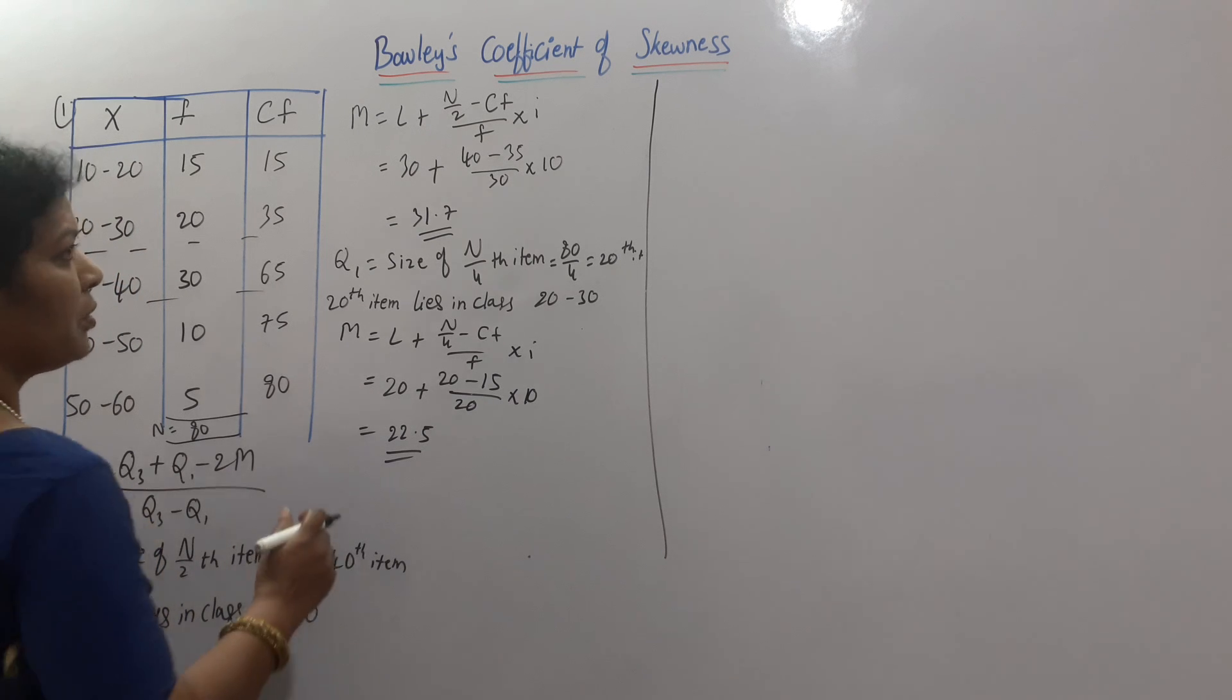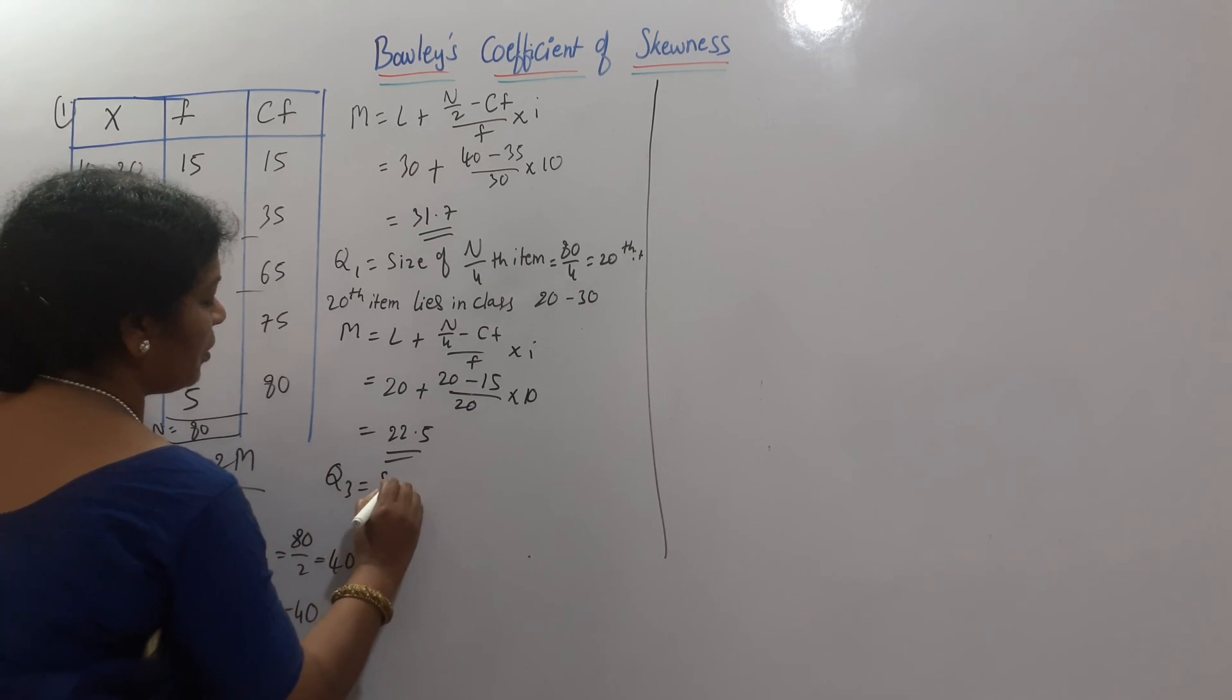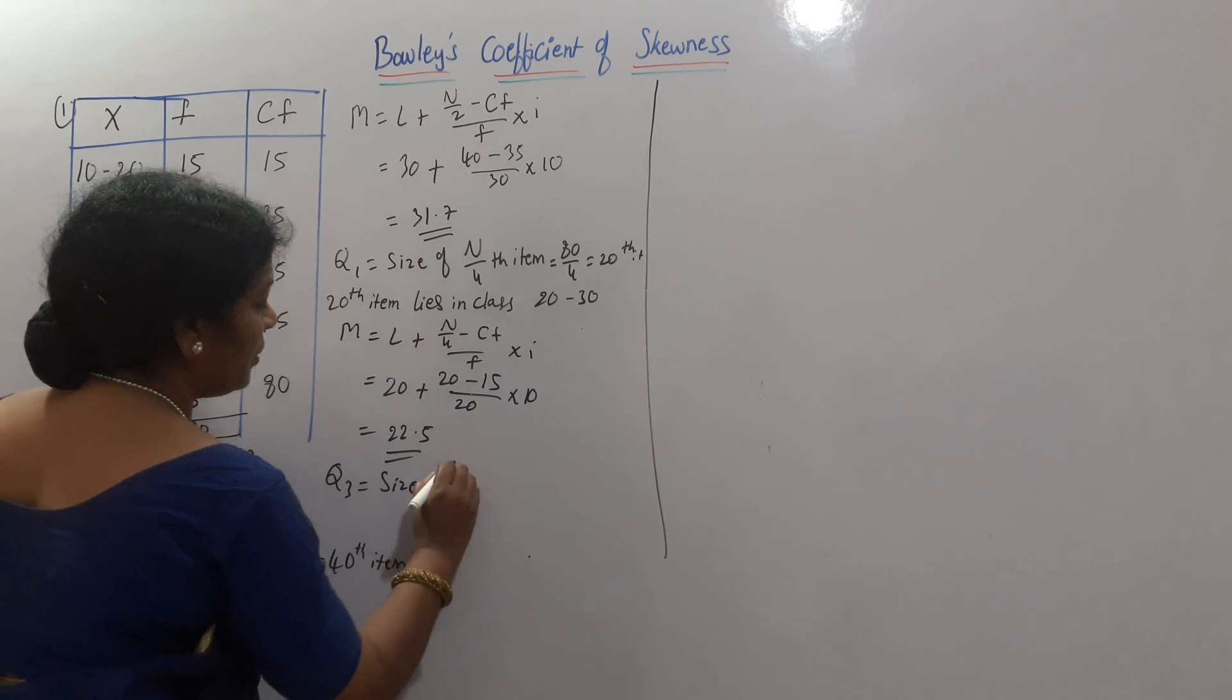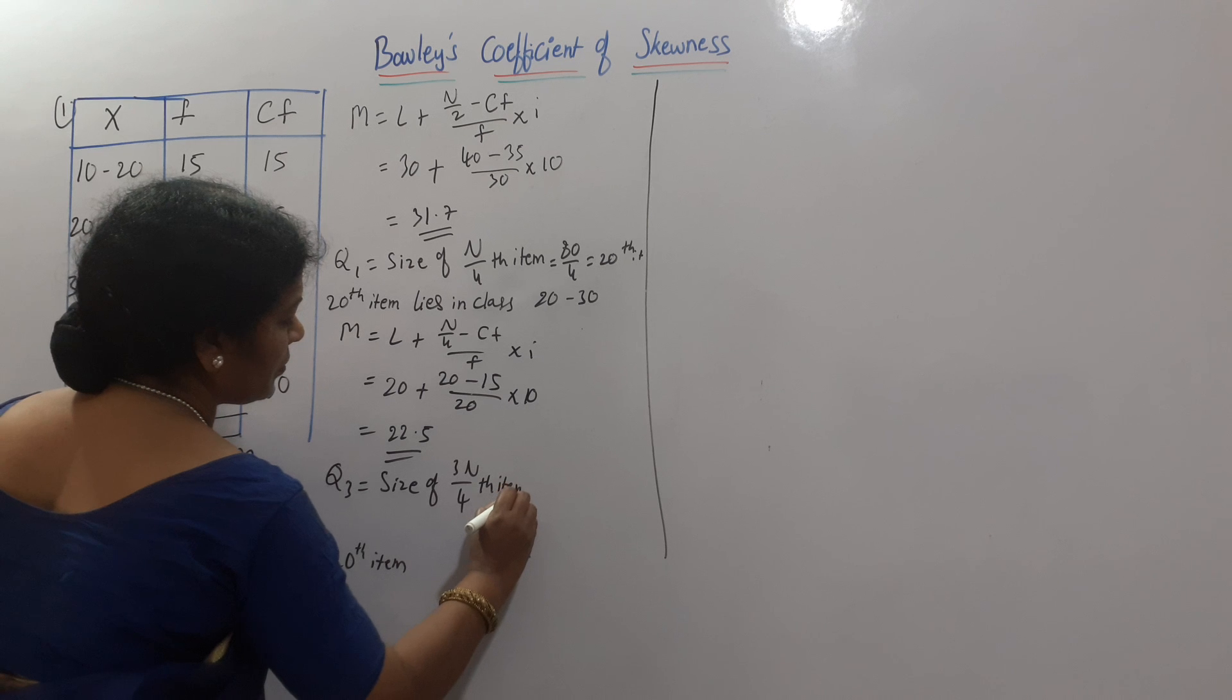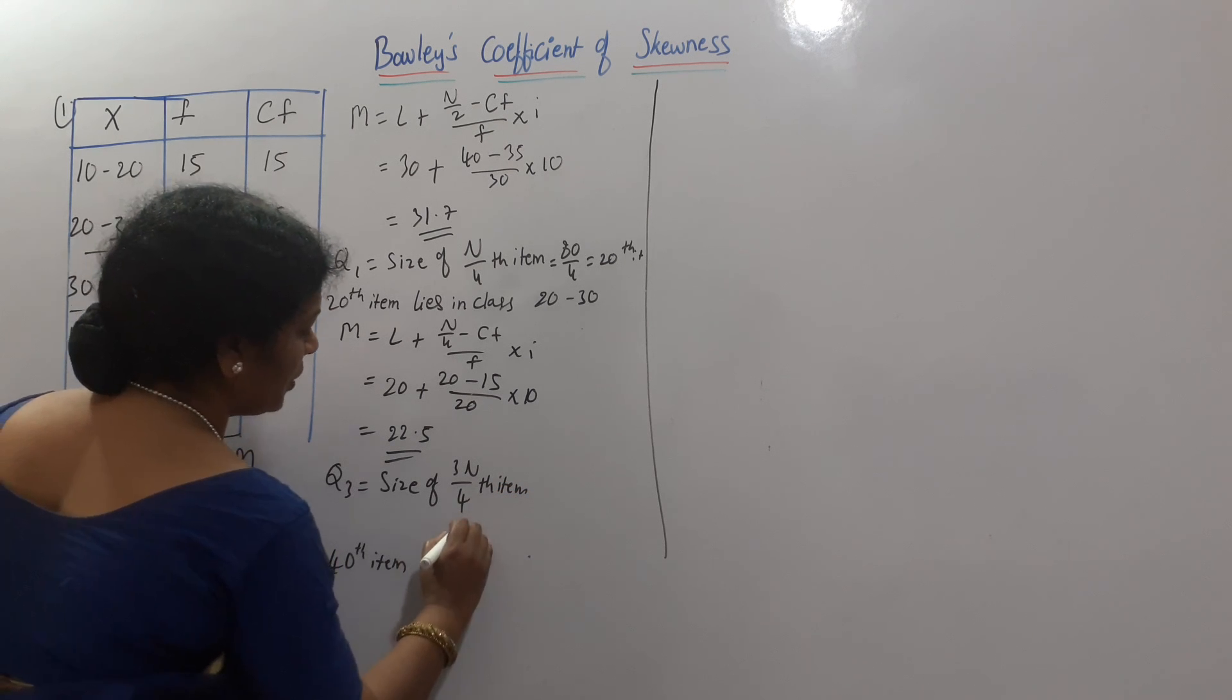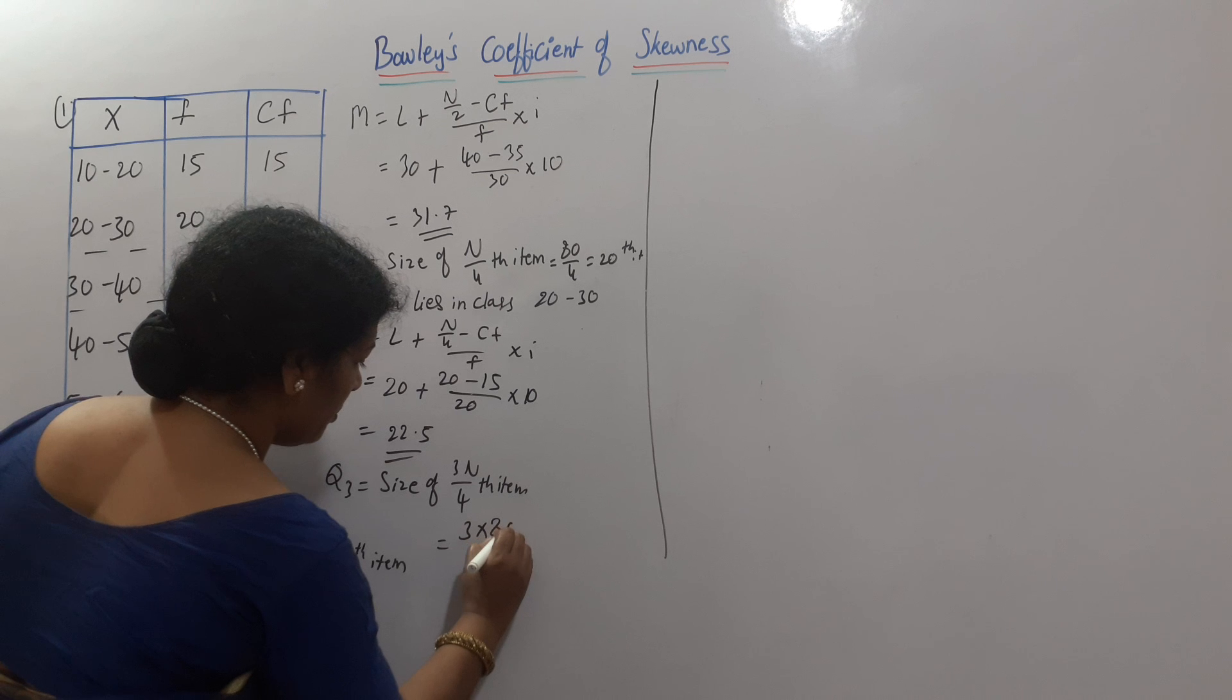Next, Q3. Q3, what is the formula? First formula is size of 3N by 4th item. 3 into N. 3 into N is here 80.